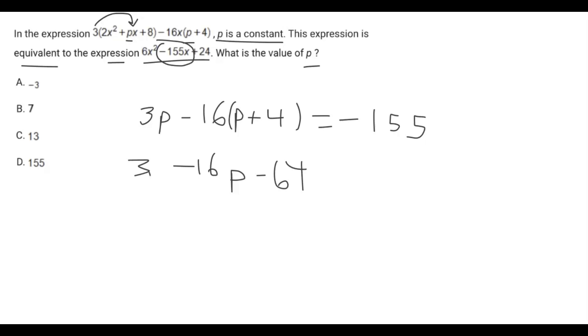Then we have 3p on this side, so this is equivalent to negative 155. Let's do some simple algebra. We add 64 on both sides, which gives us 91 on this side.